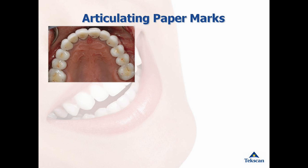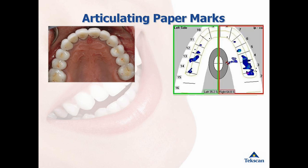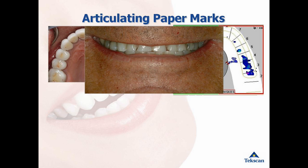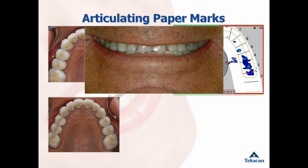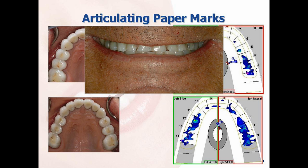The reality is articulating paper and waxes provide limited information on contact timing and force. The T-Scan system is a valuable tool that aids in the diagnostic process of analyzing a patient's bite and showing what is and what is not functioning properly. When a bite is unstable, it can cause pain, teeth to crack and break, dental restorations to crack and break, gum disease, tooth loss, headaches, and TMJ disorder.